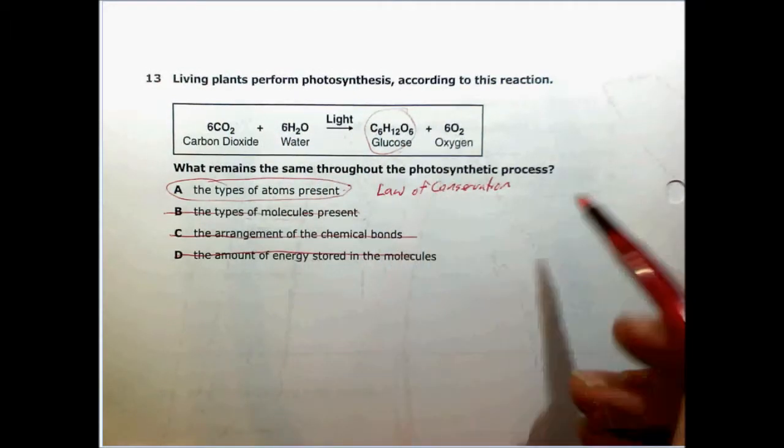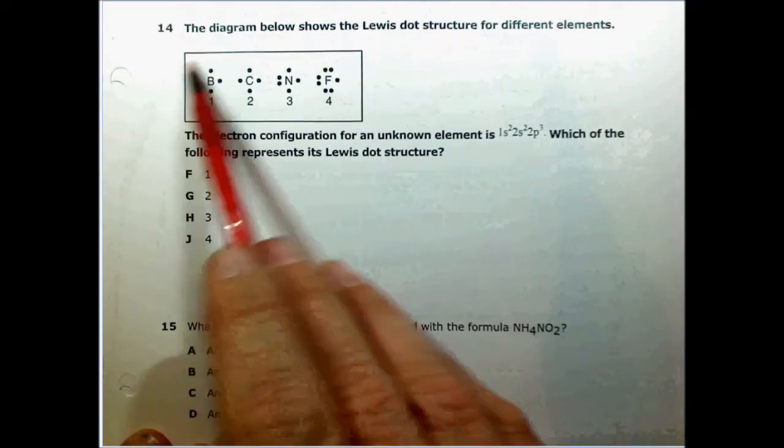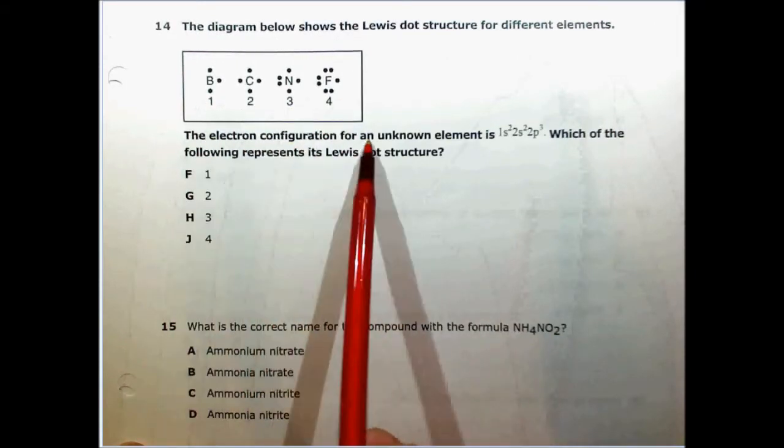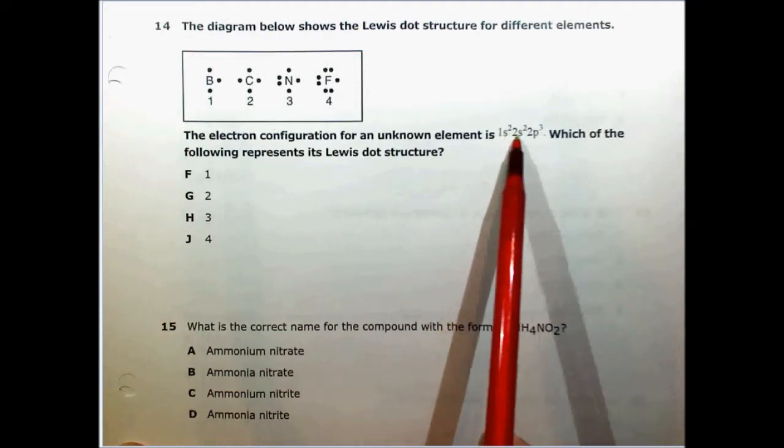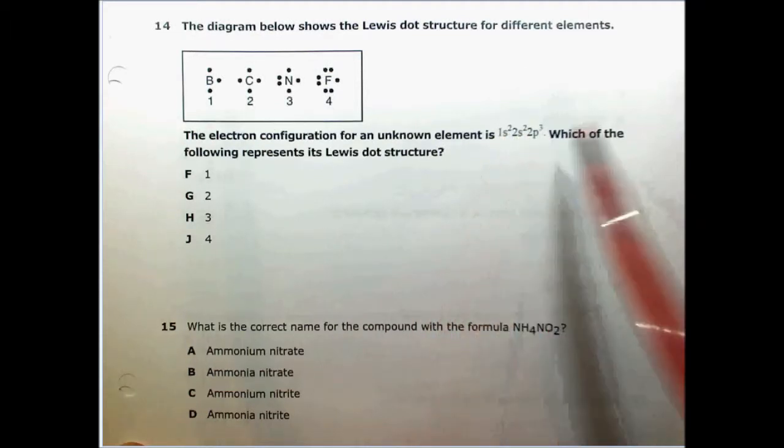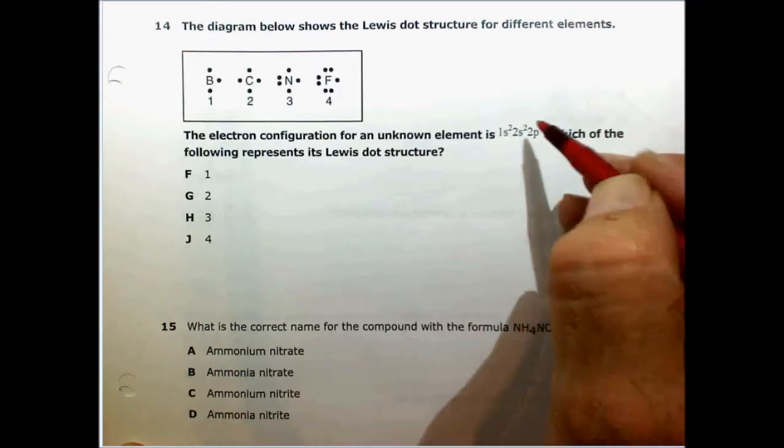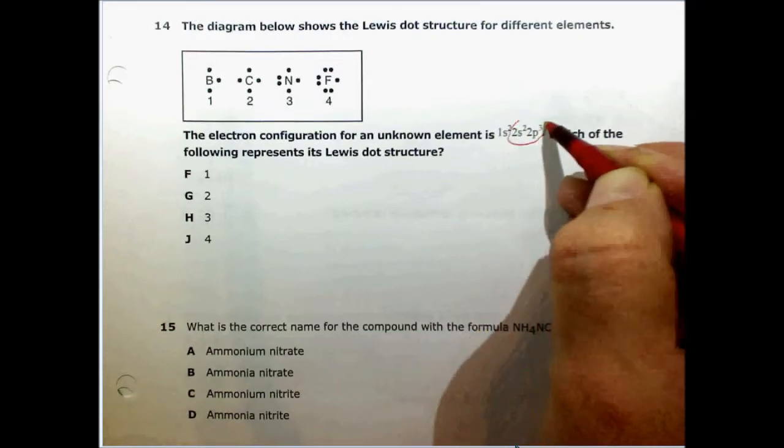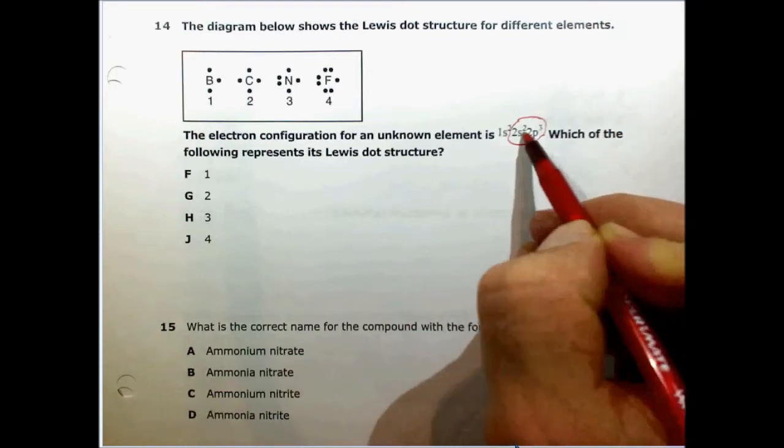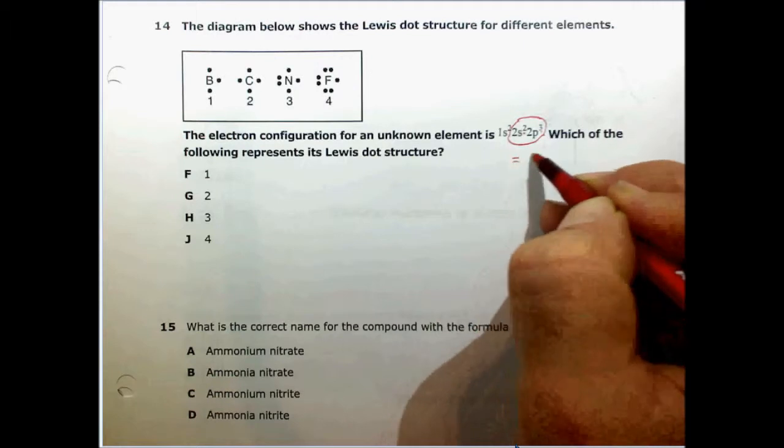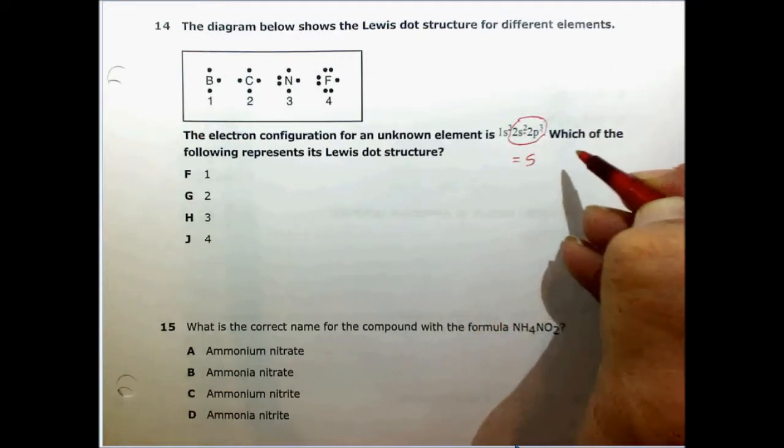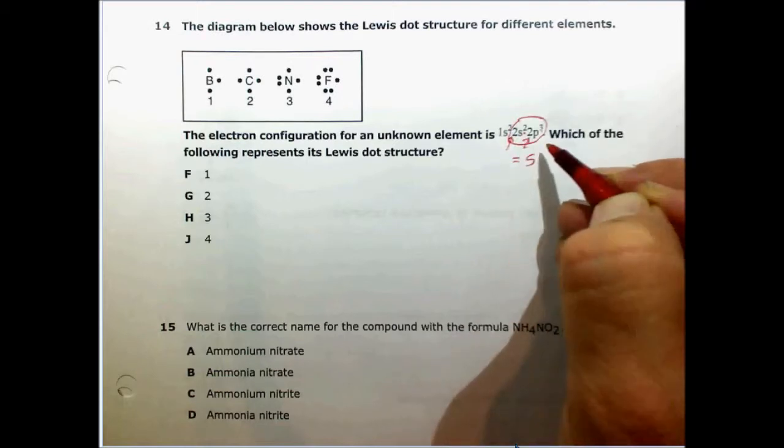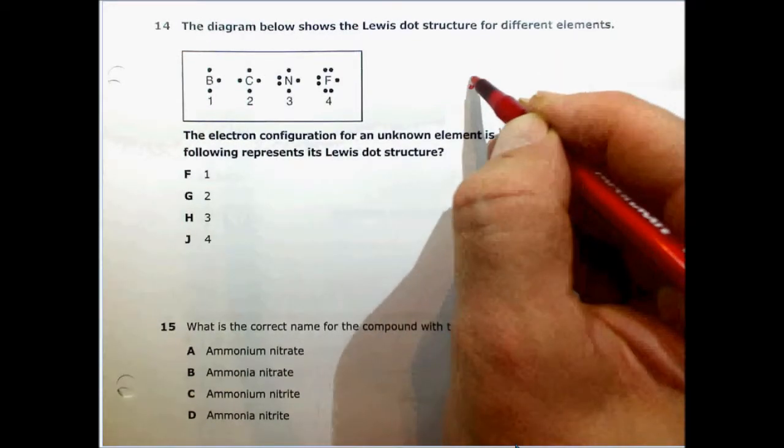Number 14 says the diagram below shows the Lewis dot structure for different elements: boron, carbon, nitrogen, and fluorine. The electron configuration of an unknown element is 1s2 2s2 2p3. Which of the following represents its dot structure? Well, s and p are the first two columns and the last six columns of the periodic table. We look at these two and these three, we add them together, we get five, so there are five electrons in the outer energy level.